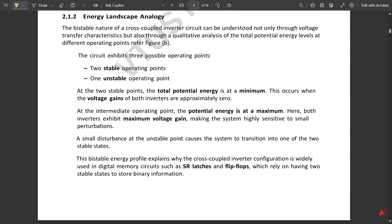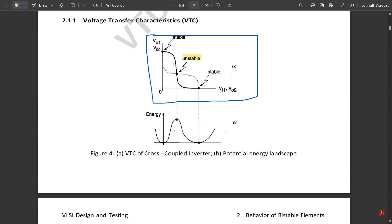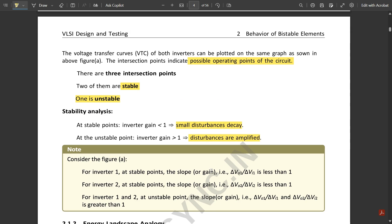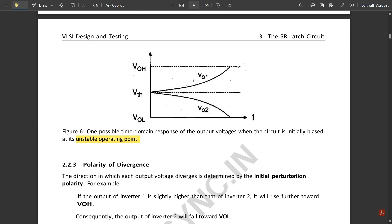When we see the unstable state at this point, how the inverter would be working is mentioned in this graph. At the unstable operating point, this shows the graph with respect to the two output voltages, VO1 and VO2.